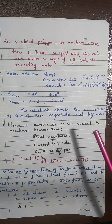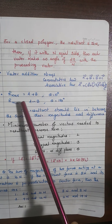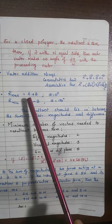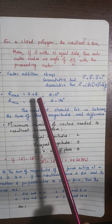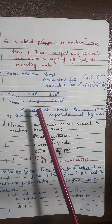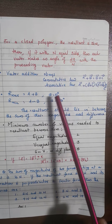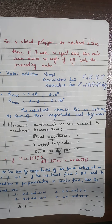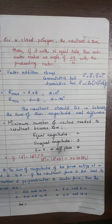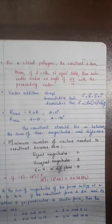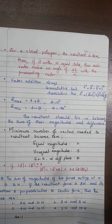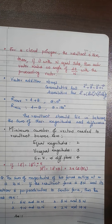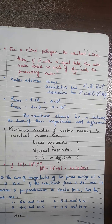When does the resultant become maximum? Using R = √(A² + B² + 2AB cosθ), with θ as the variable, the resultant is maximum when θ = 0 and minimum when θ = 180 degrees. Keep in mind: the resultant must lie between the sum of their magnitudes and the difference between them.